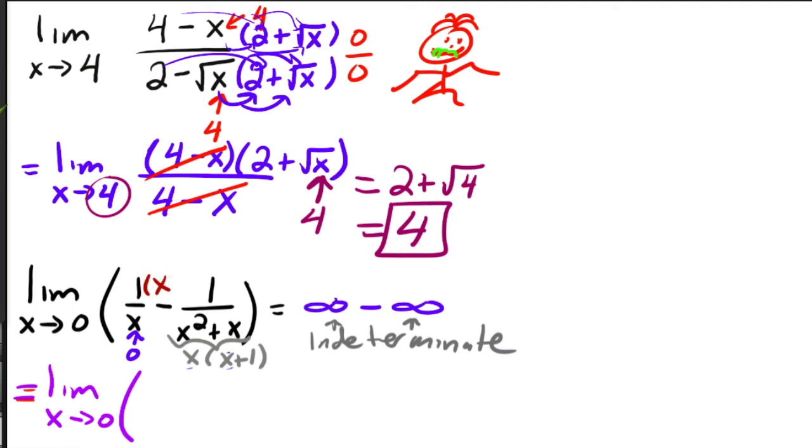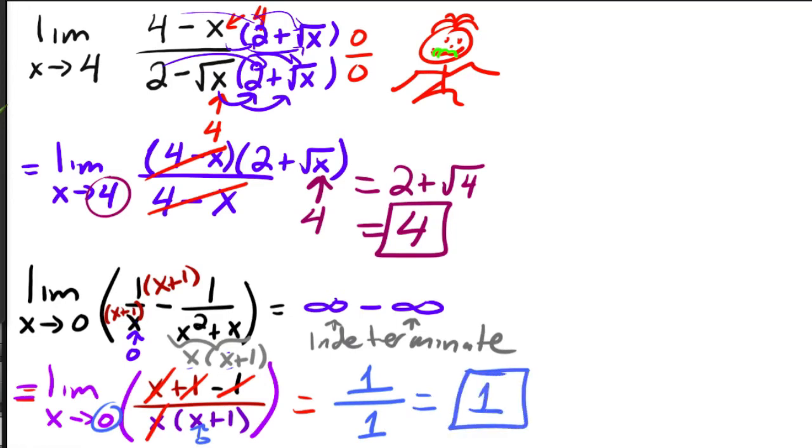So then I would only need to multiply this guy by x plus one, this guy by x plus one. And then on top, I would get x plus one minus one over x times x plus one. And so notice that one minus one, those guys cancel. And now that x is the only thing left over on top, well, those two, I can divide them. And if I plug in zero now, I get on top, I have one over zero plus one, which is one. So the limit of this guy is simply equal to one.